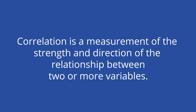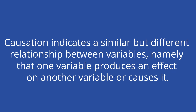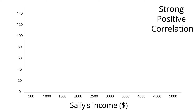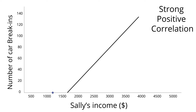Correlation does not equal causation. Correlation is a measurement of the strength and direction of the relationship between two or more variables. Causation indicates a similar but different relationship, namely that one variable produces an effect on another variable or causes it. Scatter plots are extremely helpful for determining if and how data correlates. The x-axis tracks change in one variable, while the y-axis tracks changes in the other, putting a focus on how the data relates to each other.